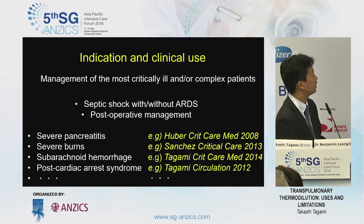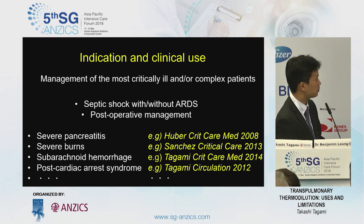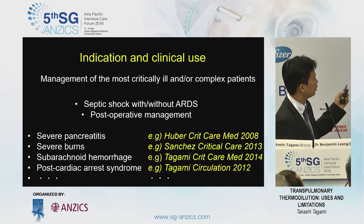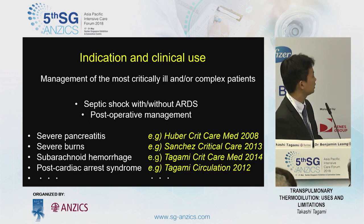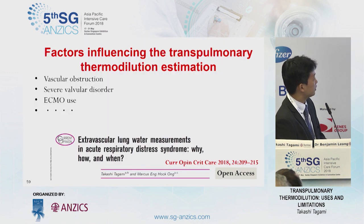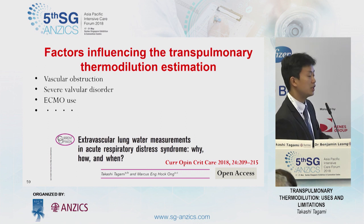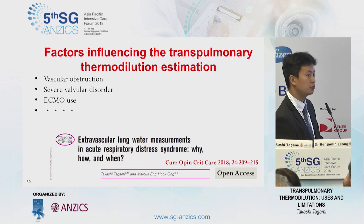What are the indications and current uses for the transpulmonary thermodilution technique? We often use it for septic shock with ARDS and high-risk operative management. In our institution, we use it for severe pancreatitis, severe burn patients, and subarachnoid hemorrhage patients. We recently published data regarding post-cardiac arrest syndrome patients, and it works well. There are some limitations: if vascular occlusion exists, such as pulmonary embolism, you cannot use it, nor in severe valvular heart disorders, or in patients on ECMO.